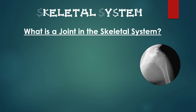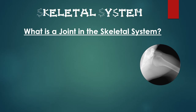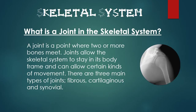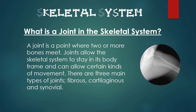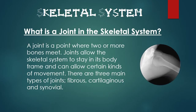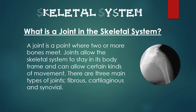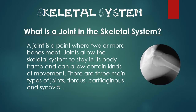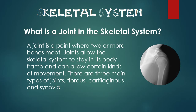So what is a joint? A joint is a point where two or more bones meet, and joints allow the skeletal system to stay in its body frame and can allow us certain kinds of movement. There are three main types of joints: fibrous, cartilaginous and synovial.